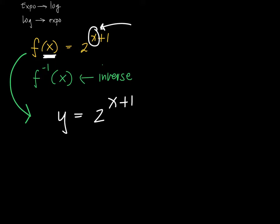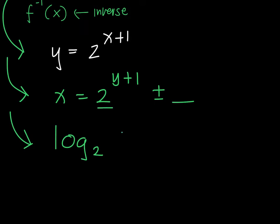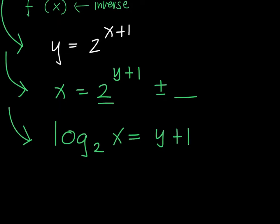Immediately after that, you interchange x and y — just as when finding the inverse of linear or rational functions. y becomes x and x becomes y. Now, since there's no additional plus or minus number, you can express this directly in logarithmic form. It becomes log with base 2 of x, which equals the exponent y plus 1.